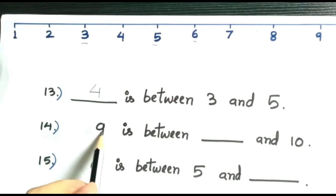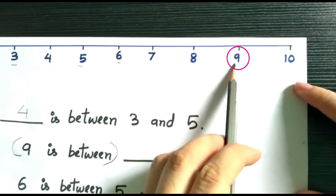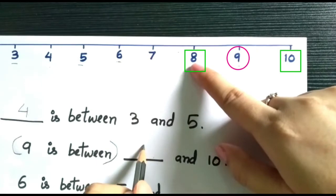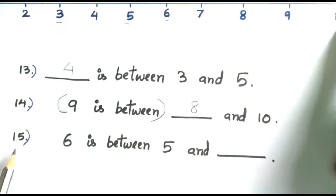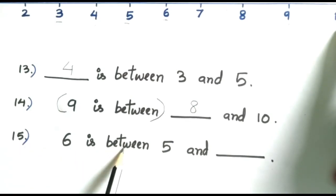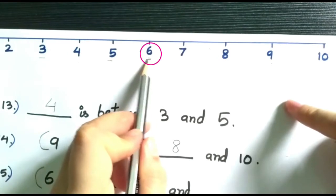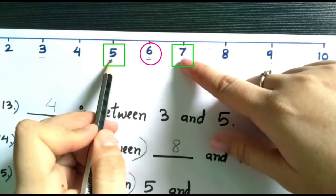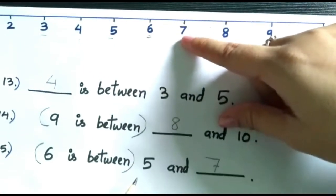Now the next question: nine is between dash and ten. Nine is between — matlab nine jo hai beech me hai, nine is in the middle. So at the corners of nine are eight and ten, so eight will come here and ten is already given. Now the last question, fifteen: six is between five and dash. Six is in the middle, so at the corners of six are five and seven. Five is already given, so we'll write here seven.